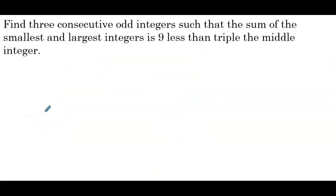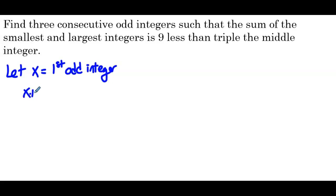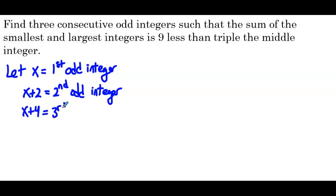Find 3 consecutive odd integers such that the sum of the smallest and the largest integers is 9 less than triple the middle integer. Let's start with our let statement: let x be the first odd integer, x plus 2 be the second odd integer, and x plus 4 be the third odd integer. Now we have our let statement defined and we can unpack that word problem.